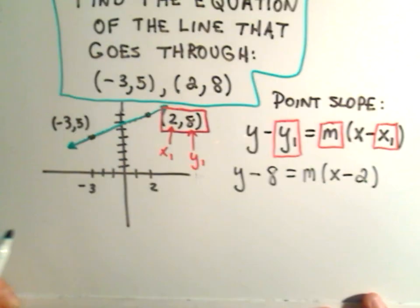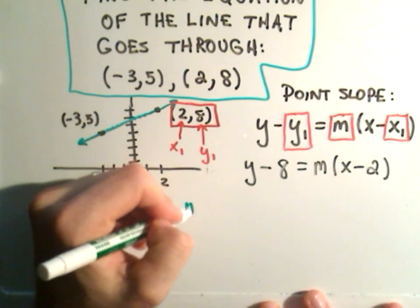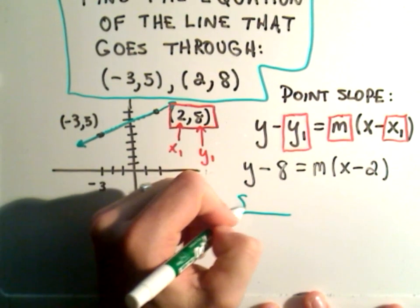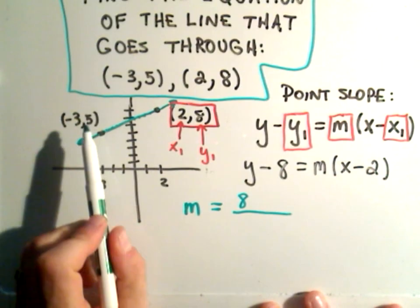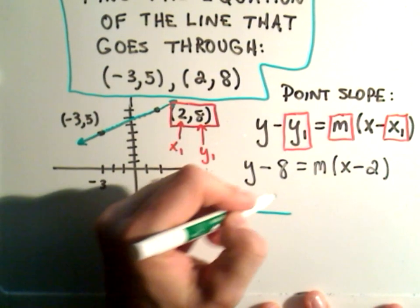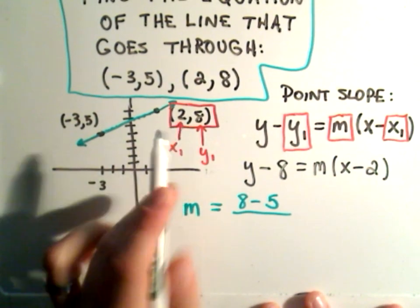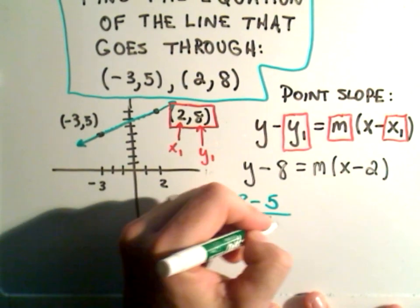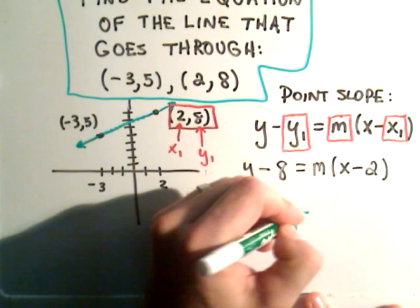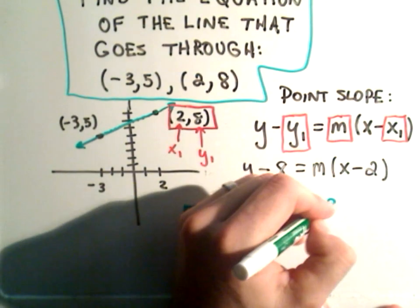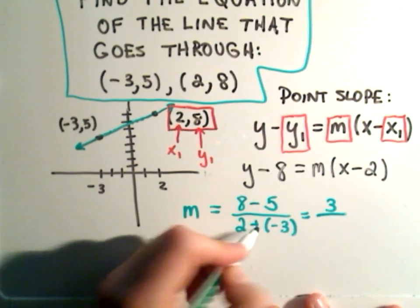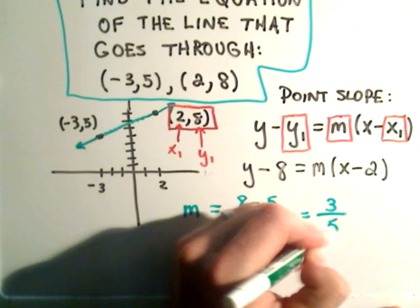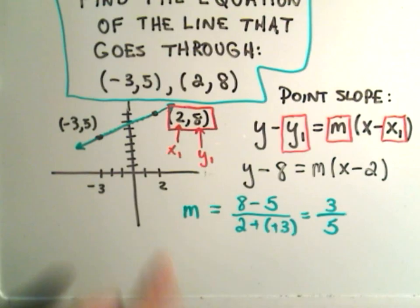Well, we saw how to find the slope in another video, and that's just the change in y over the change in x. So it says I subtract the y-coordinates, so I'll take 8 minus 5. I'll have to be a little careful with my signs on the bottom part. I'll get 2 minus negative 3. 8 minus 5 is just 3. Remember, 2 minus negative 3, well, 2 negatives turn into a positive, so that'll give me 2 plus 3, or a slope of 3 fifths.